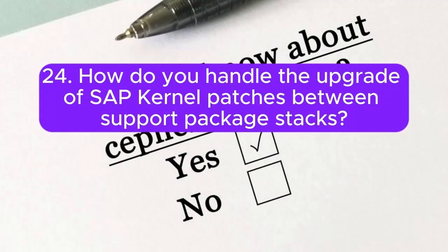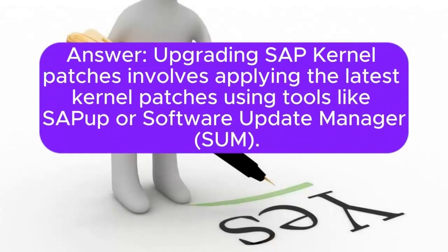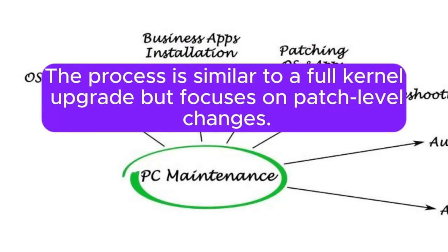24. How do you handle the upgrade of SAP kernel patches between support package stacks? Upgrading SAP kernel patches involves applying the latest kernel patches using tools like SAPUP or Software Update Manager (SUM). The process is similar to a full kernel upgrade, but focuses on patch-level changes.